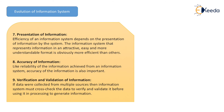9. Verification and Validation: If data were collected from multiple sources, then the information system must cross-check the data to verify and validate it before using it in processing to generate information. So these are the 9 criteria which we follow to evaluate an information system. Thank you.